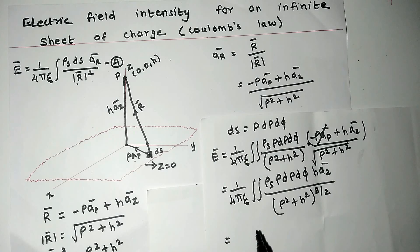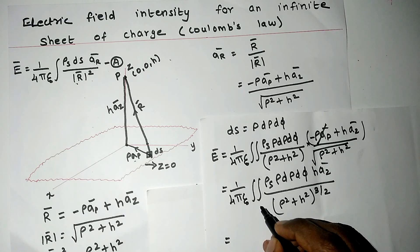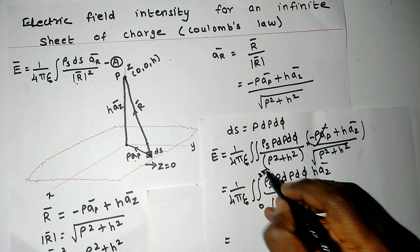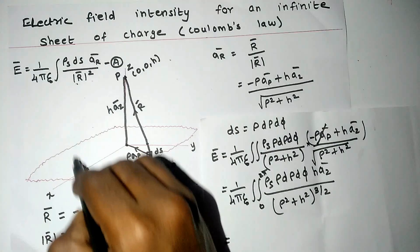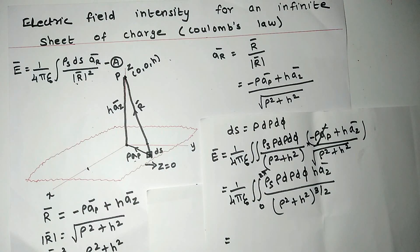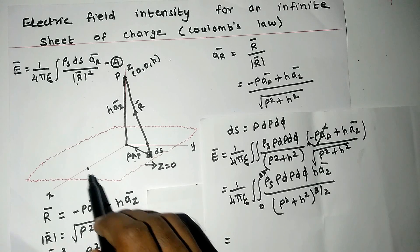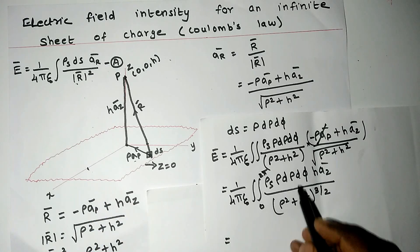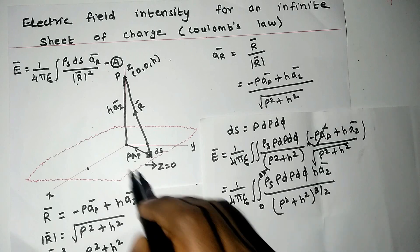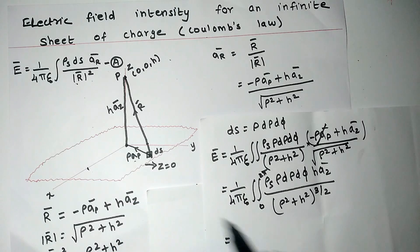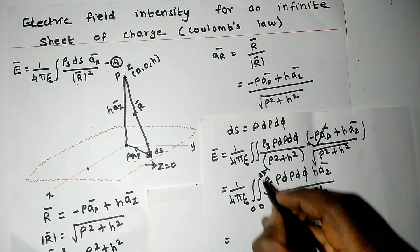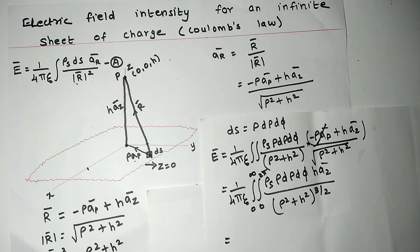Now we have to write the limits for the integral terms. For φ, the limits are from 0 to 2π, because to make a complete rotation it has to make an angular displacement of 0 to 2π. For ρ, the radius starts from 0 and ends at infinity, since the dimension of the sheet is infinite, so the limit is 0 to infinity.